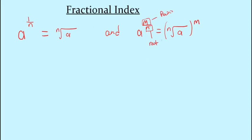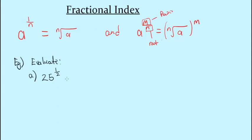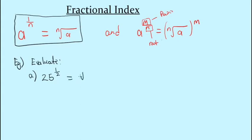Let's work a question. The first example asks us to evaluate 25 raised to the half power. The denominator tells us the type of root, so it's the square root of 25. The square root of 25 is 5, so the answer is 5.